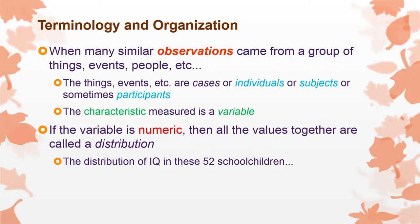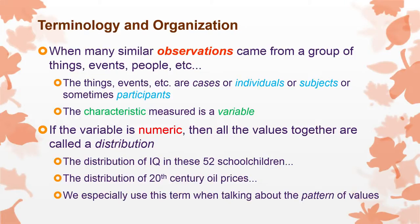Then all the values together are sometimes called a distribution. So we could say what's the distribution of IQ in these 52 schools? We could say what's the distribution of oil prices. We're especially likely to use the term distribution when we're not just talking about the group but we're looking at a pattern of the group. So we say if this distribution is positively skewed or skewed towards high prices or something like that.